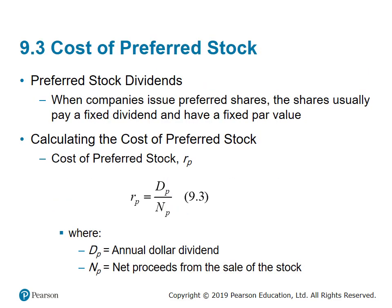The second source is preferred stock. The cost of preferred stock (kp) is calculated as: kp = Dp / Np, where Dp is the annual preferred stock dividends in dollars and Np is the net proceeds from selling the preferred stock. When companies issue preferred shares, they usually pay a fixed dividend and have a fixed par value. Unlike common stock, preferred stock pays a stated fixed dividend, so we divide that fixed dividend by the net proceeds after selling the stock.